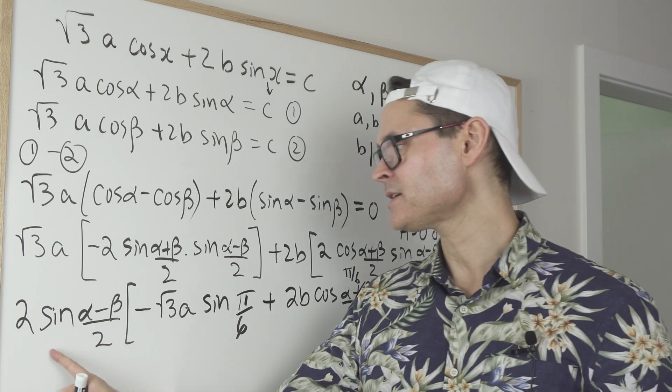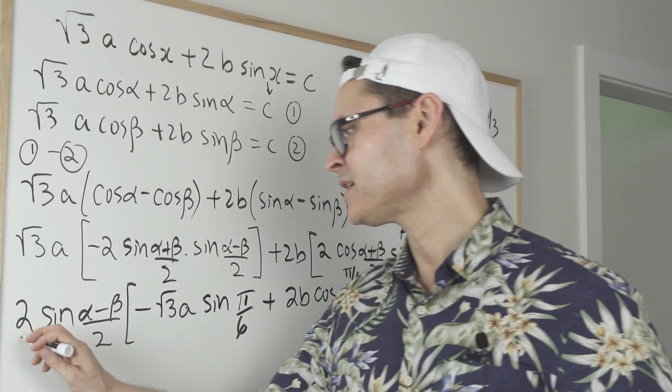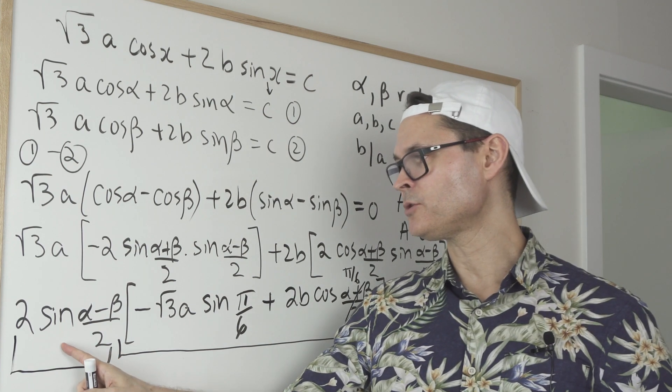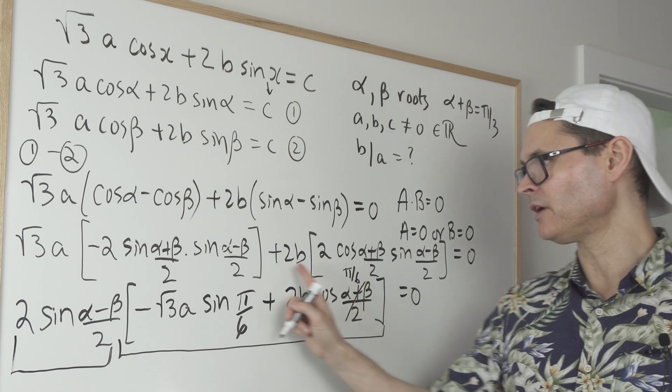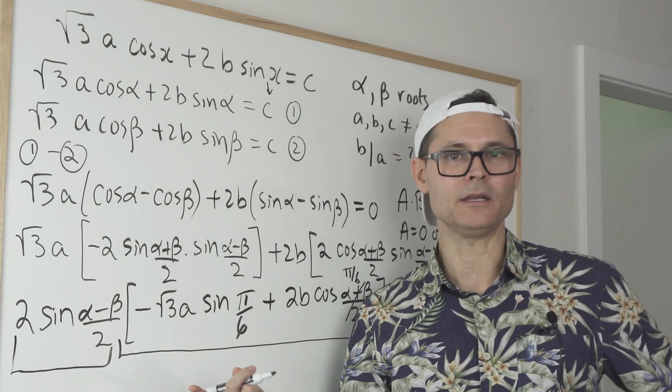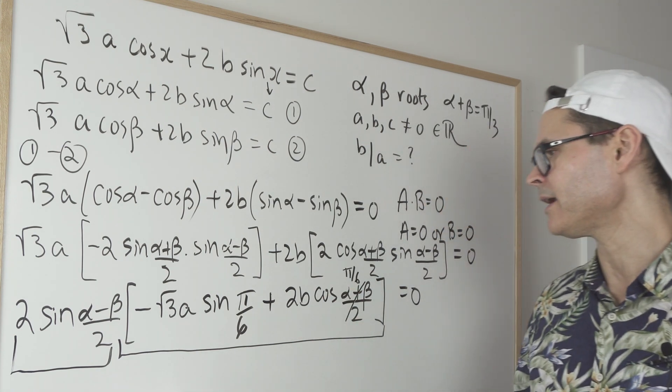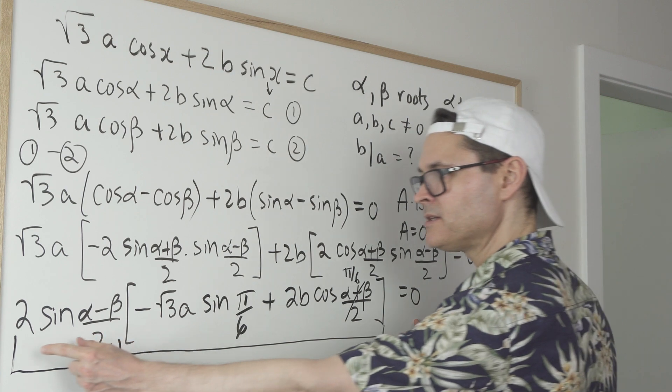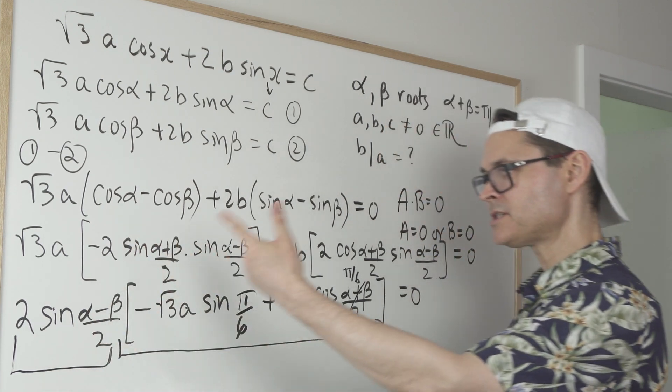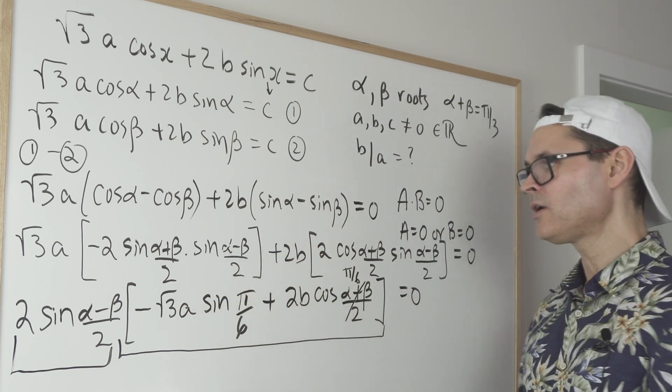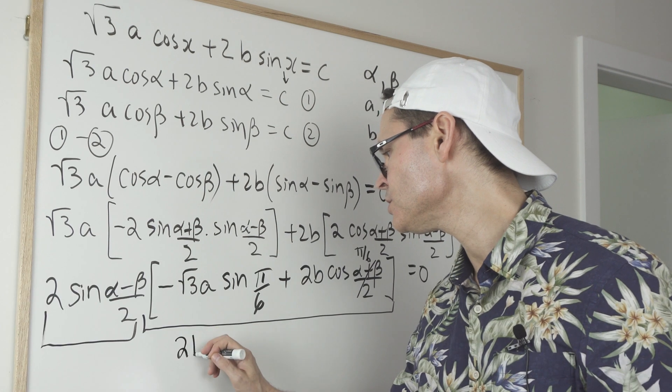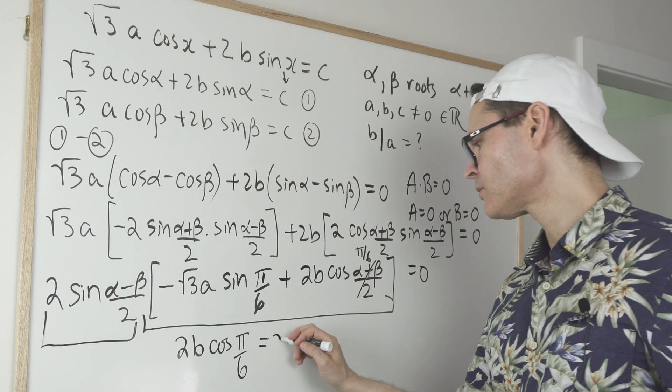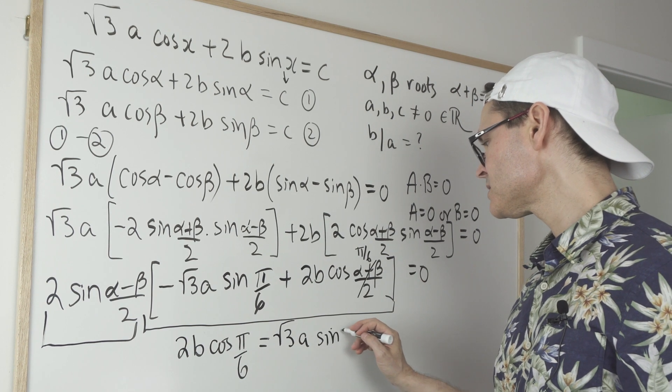Now, notice I have this times this equals 0. Okay, so think of this as your big A and this as your big B. So that means either this is equal to 0 or this is equal to 0. Well, I'm going to put my attention on this part right here because that doesn't have an A or a B in it. So it's not going to necessarily help me deduce the ratio of B over A. But this does. Look, there's an A and there's a B. So I'm just going to take this part here. Therefore, this has to be equal to 0 because this times this is equal to 0. So either this is equal to 0 or this is equal to 0. If this can be set equal to 0, that also implies that this is true.